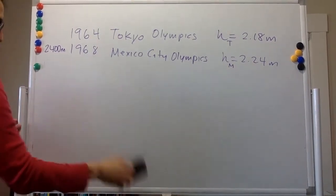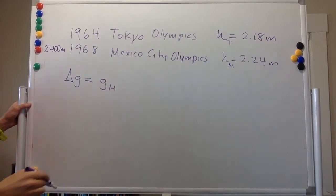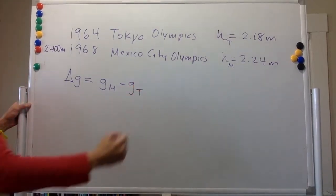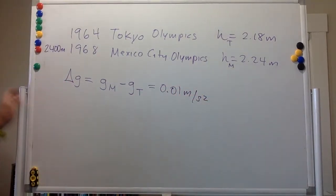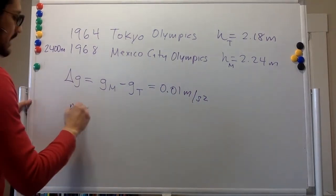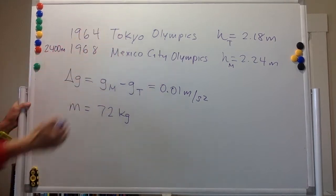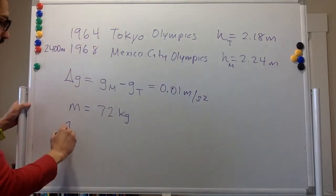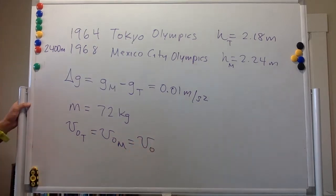That difference in altitude results in a change in the acceleration due to gravity. The acceleration due to gravity in Mexico City minus the acceleration due to gravity in Tokyo is given as 0.01 meters per second squared. A high jumper with a mass of 72 kilograms performs the same jump in Tokyo and Mexico City, with the same initial velocity in both locations.